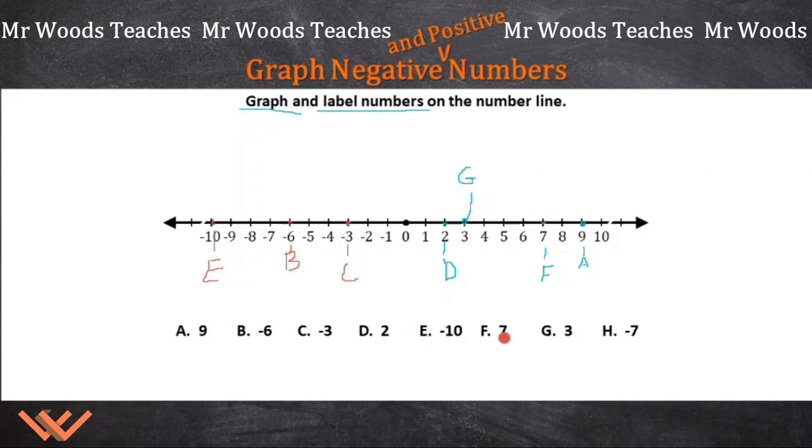So we've labeled E, F is positive, G is positive, H is negative 7. There we go, and I'm going to go up because it is crowded down there, so there's H.